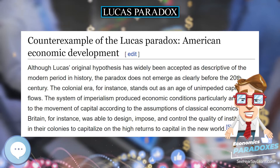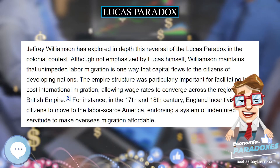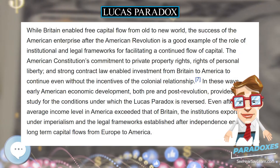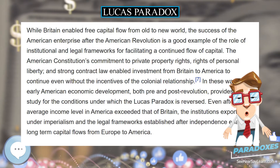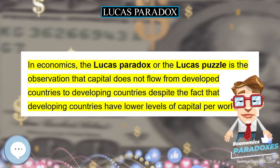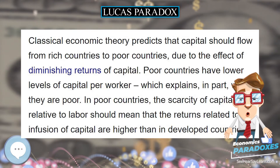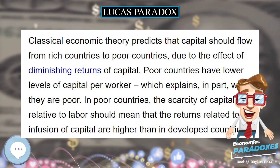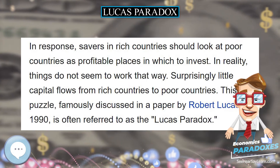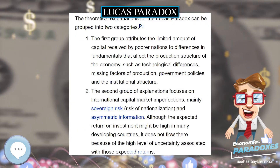Authors more recently have focused their explanations for the Paradox on Lucas' first category of explanation: the difference in fundamentals of the production structure. Some have pointed to the quality of institutions as the key determinant of capital inflows to poorer nations. As evidence for the central role played by institutional stability, it has been shown that the amount of foreign direct investment a country receives is highly correlated to the strength of infrastructure and the stability of government in that country.